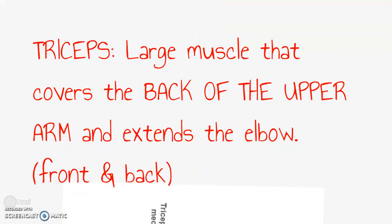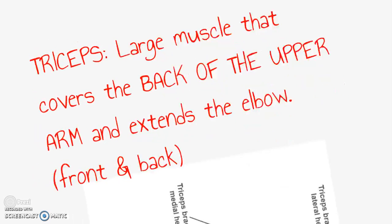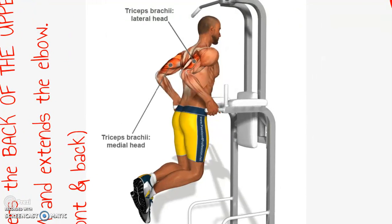The opposite of biceps is the triceps. This is found on the back and bottom of the upper arm. It allows you to extend or straighten your elbow. We use the triceps when we are pushing something away. The triceps can be seen from the front and back view as well. One exercise that works the triceps very effectively is called dips. This is, however, a difficult exercise since you are pushing all of your body weight. If you do diamond push-ups where your hands are close together, the main focus will also be on your triceps.